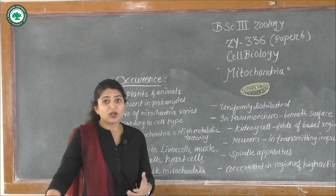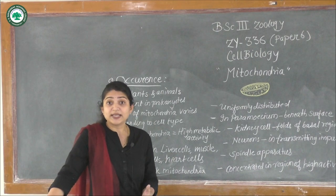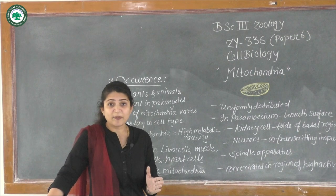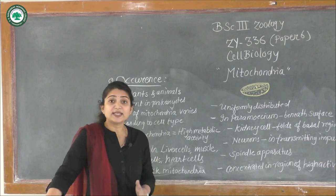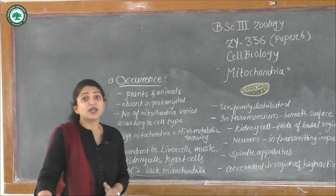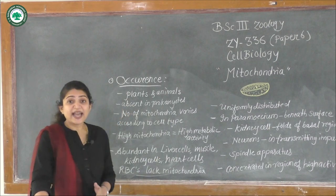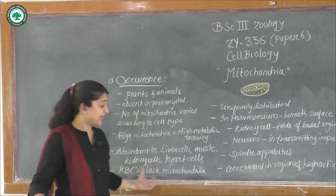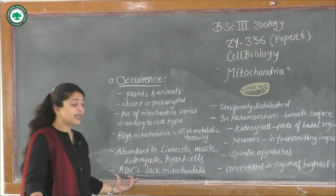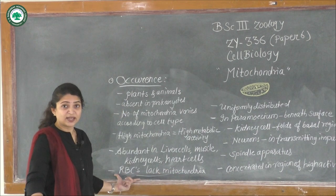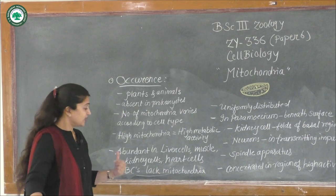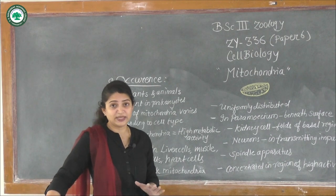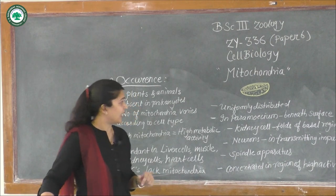To summarize: high mitochondria equals high metabolic activity, and low mitochondria equals low metabolic activity. Also, there are some cells that completely lack mitochondria — these are the red blood cells, which lack mitochondria entirely.